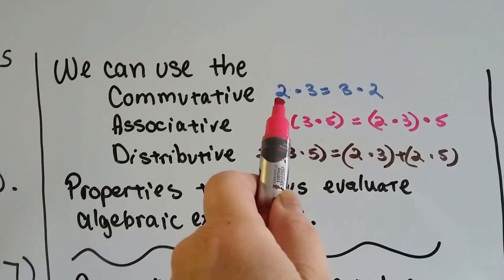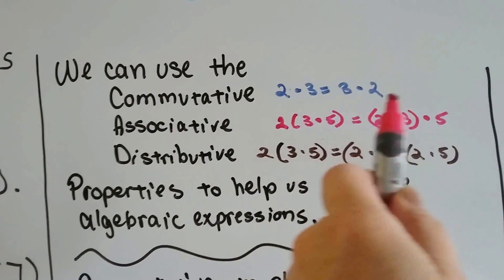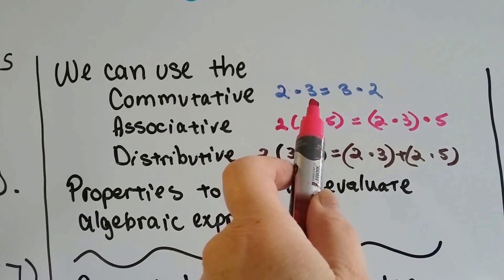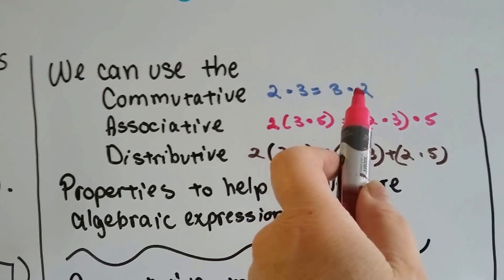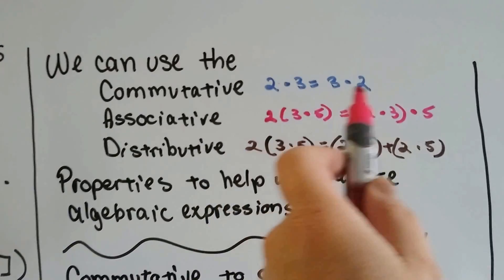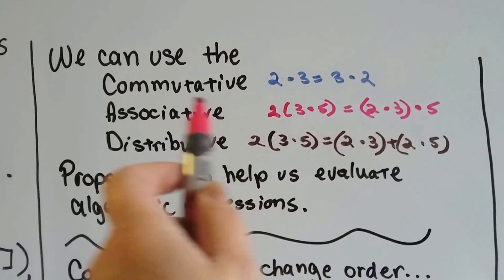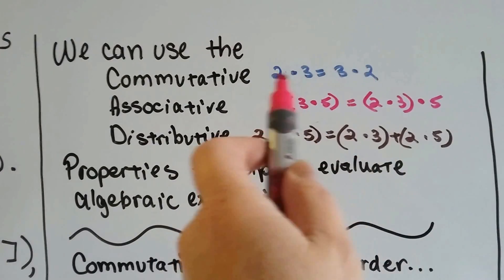Commutative is when it's the same commute backwards and forwards. If it's 2 times 3 distance to get to school, then when you're at school and you want to go home, it's 3 times 2. You're going the other direction and it doesn't matter. It's the same distance to school or from school. That's your commute to school or to work.